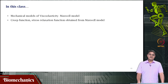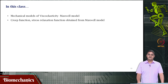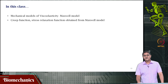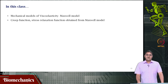In the previous class, we looked at the ideal spring and the ideal dashpot. We looked at what is a creep function and what is a stress relaxation function and how they look for an ideal spring and an ideal dashpot. We also guessed that in a viscoelastic material this is how it may look, but we did not have a model for that. We also said there is another manifestation of viscoelasticity which we called hysteresis.